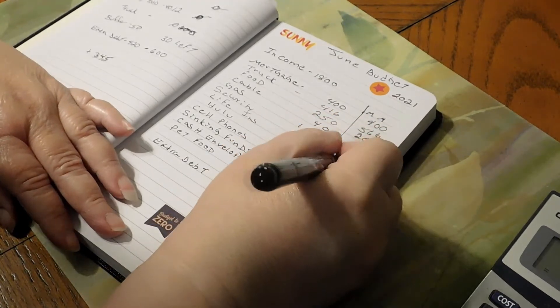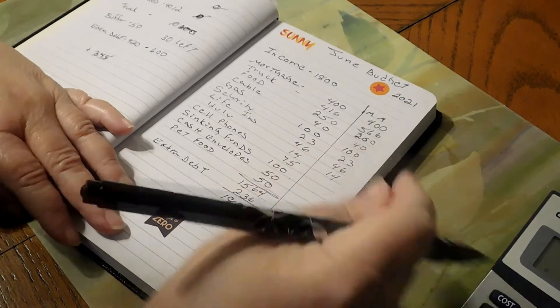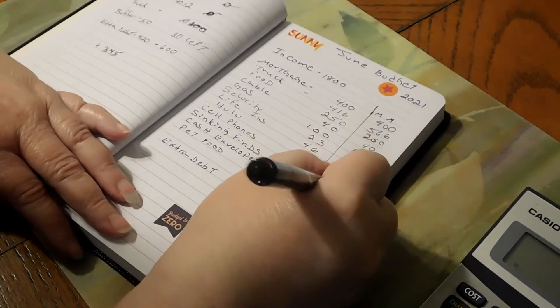Life insurance was right. Hulu, $14. Cell phones were $75.